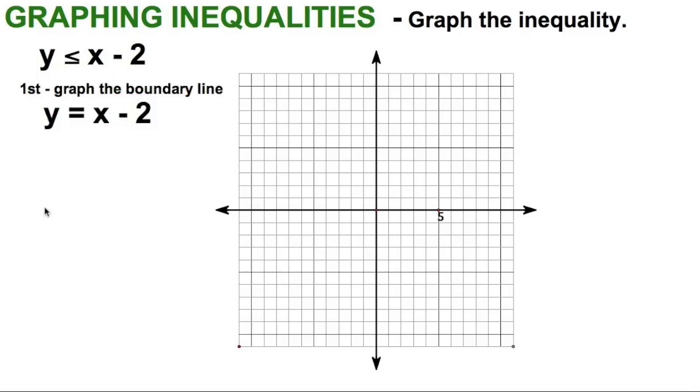First thing we do is we graph the boundary line. The boundary line, simply, I'm going to replace the inequality mark with an equal sign: y is equal to x minus 2. And you recognize that as a slope-intercept form of the line. So let's get graphing.